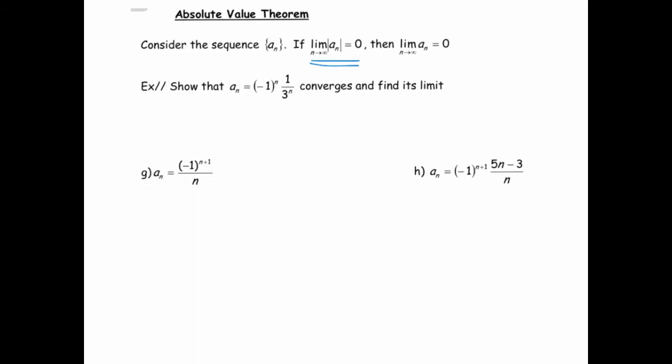Here it says show that a_n equals (-1)^n divided by (1/3)^n converges and find its limit. So let's just apply the theorem directly. According to this theorem, this oscillates, so we could take the limit of the absolute value of it. Well, when you do that, you're basically looking at (1/3)^n where all the terms are positive. They're not oscillating.